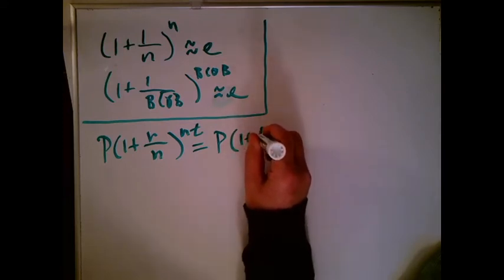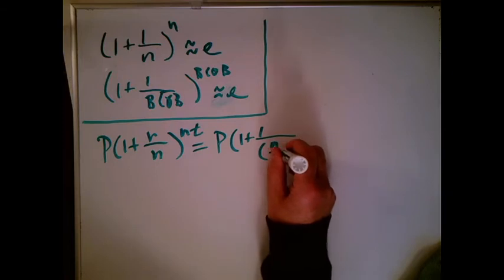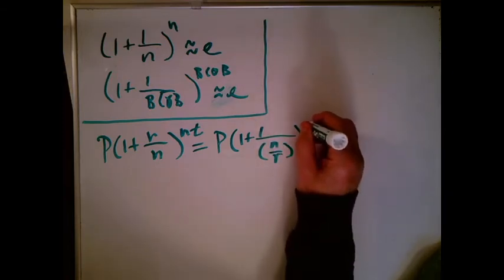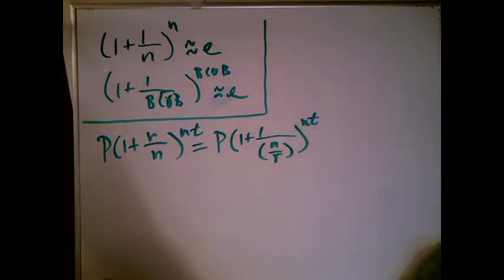So this is going to be one plus one over and then down here is going to go N over R. And then I still have my Nt, make sure that looks like an N and a T like that.